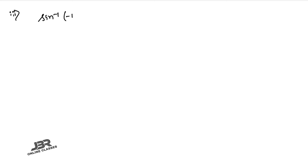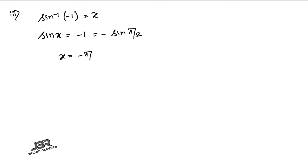Sum number 4.3: sin⁻¹(−1) = x, so sin x = −1 = −sin(π/2). Using sin(−θ) = −sin(θ), therefore x = −π/2.